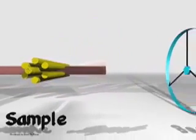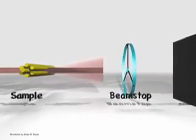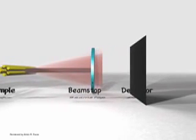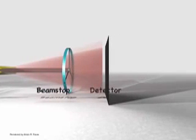The unscattered radiation is then stopped by the beam stop to prevent damage to the detector. And the scattered radiation then falls onto the detector.